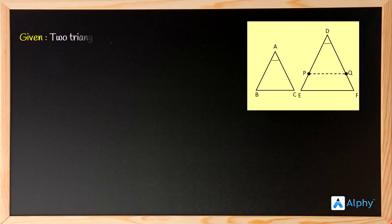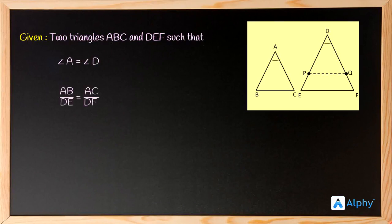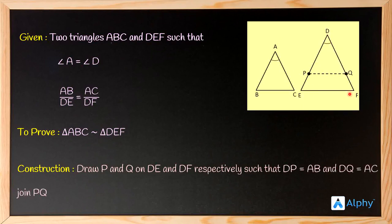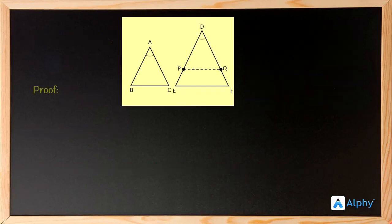We are given two triangles ABC and DEF such that angle A equals angle D and AB/DE equals AC/DF. We are required to prove triangle ABC is similar to triangle DEF. For the construction, we draw a point P on side DE and a point Q on side DF of triangle DEF such that DP equals AB and DQ equals AC, and we join PQ.